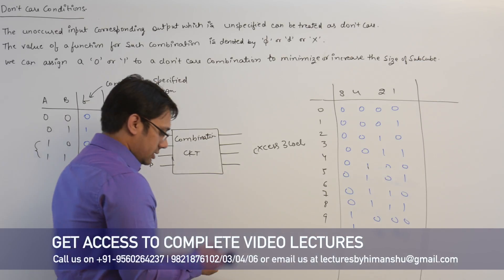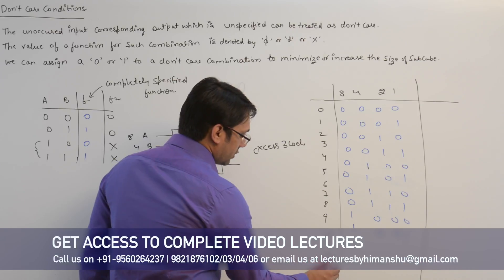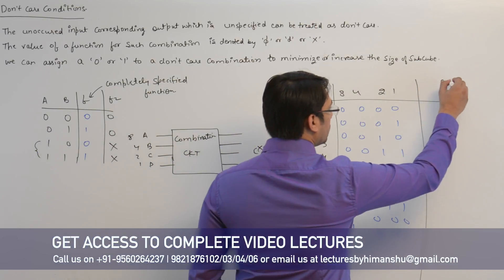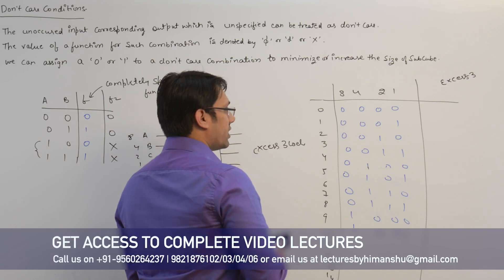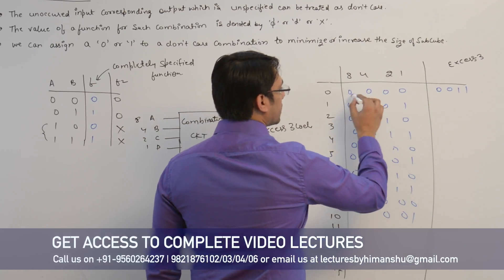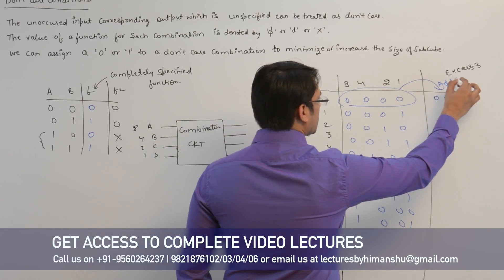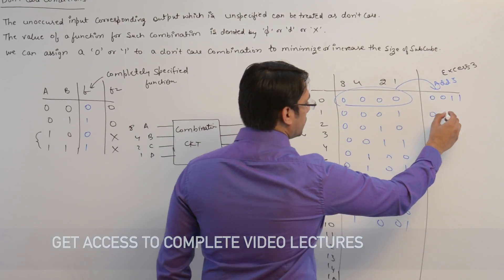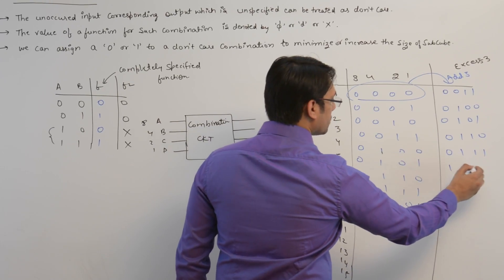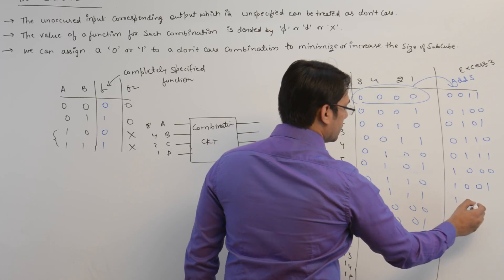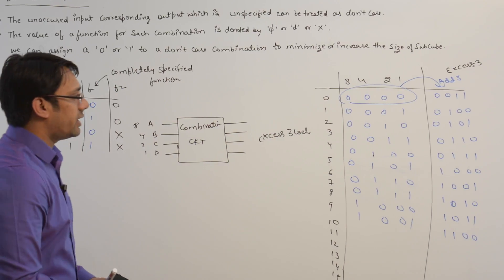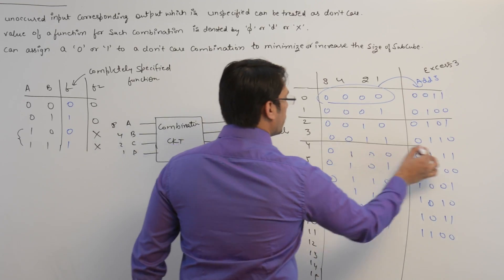The remaining combinations can represent 10, 11, 12, 13, 14, and 15. To get the XS3 code, you add 3 to each value. So the XS3 codes for digits 0 through 9 are 0011, 0100, 0101, 0110, 0111, 1000, 1001, 1010, 1011, and 1100. We have thus converted the 8421 code to the XS3 code.